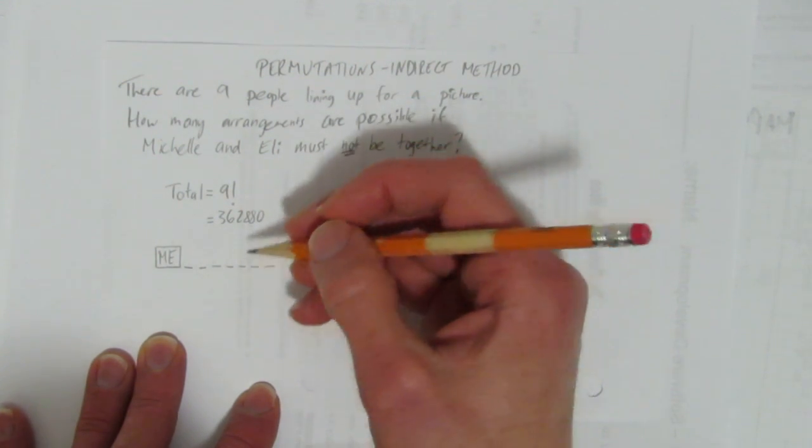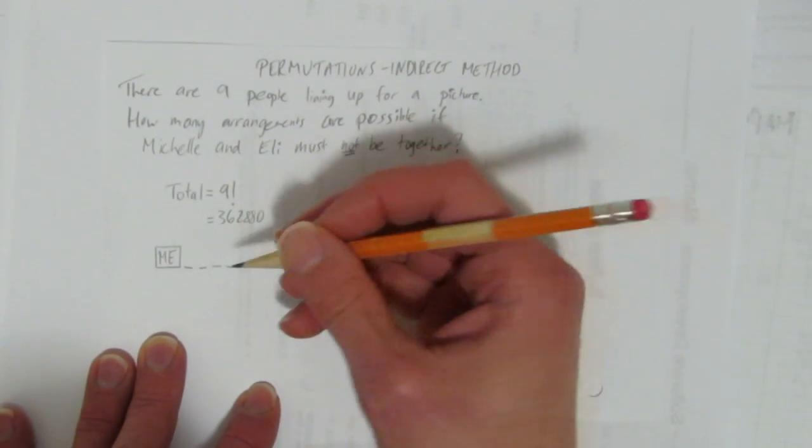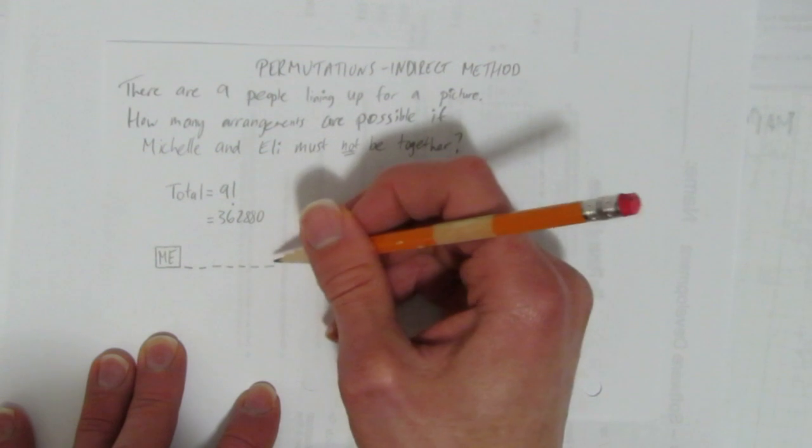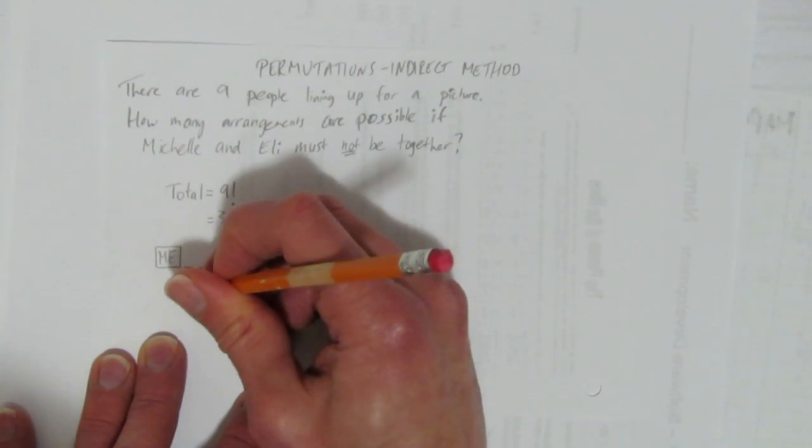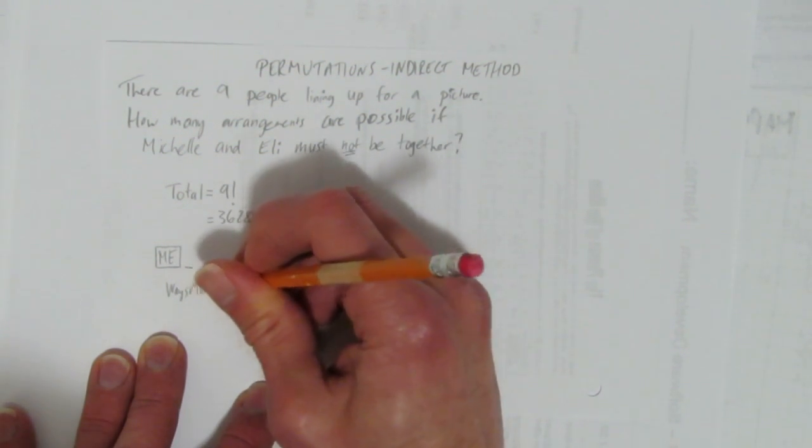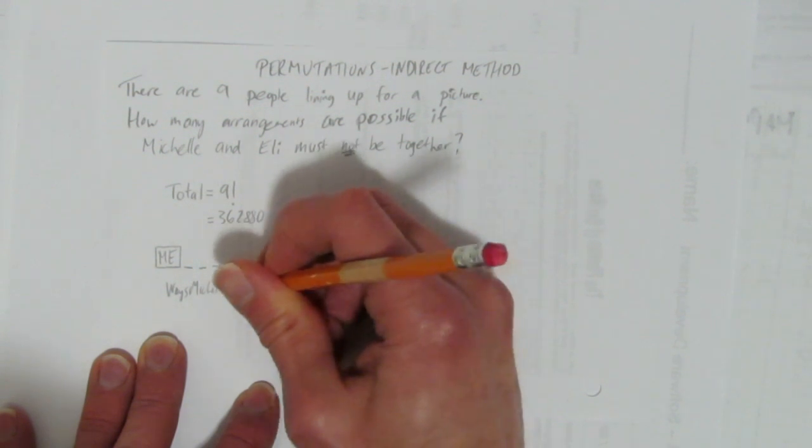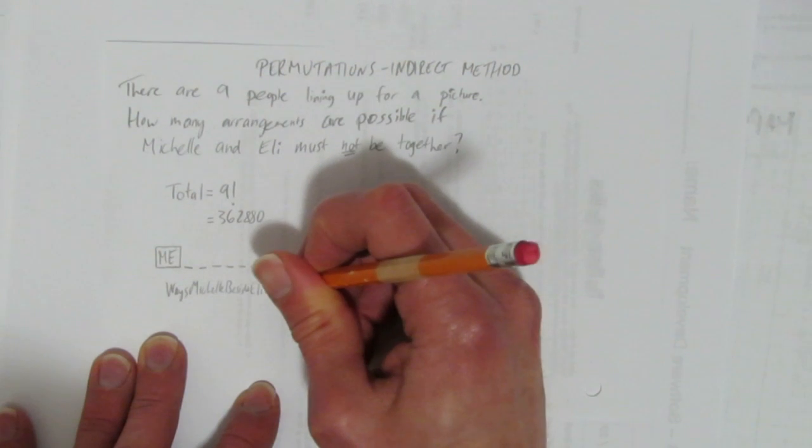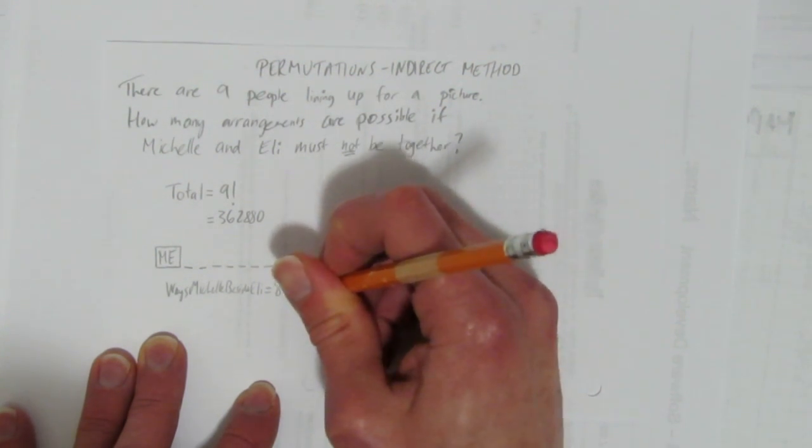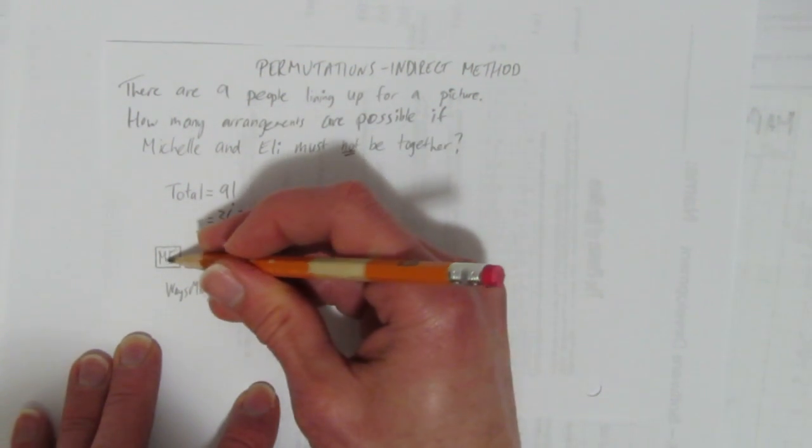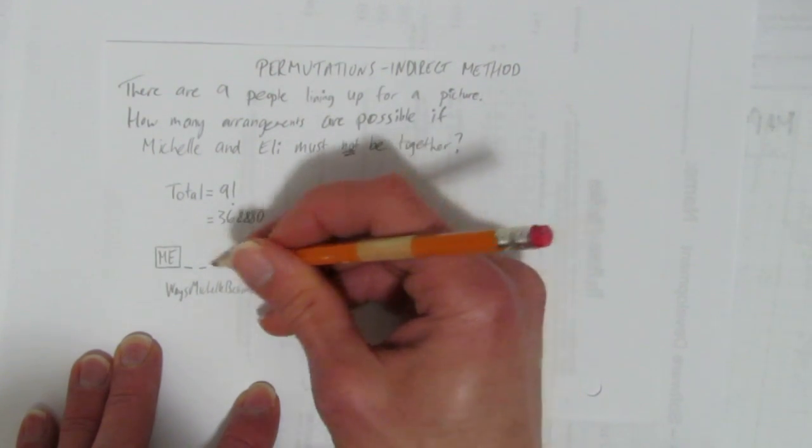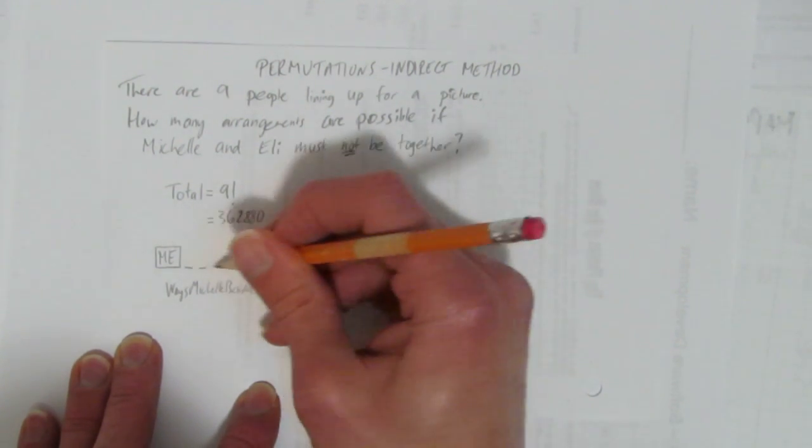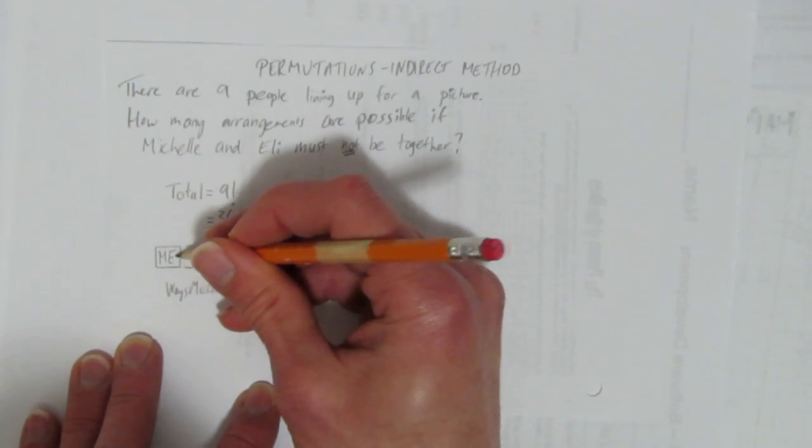In other words, the number of ways that Michelle and Eli could be beside each other are eight factorial. So I'm going to write that ways Michelle beside Eli equals just eight factorial. That's Michelle here, Eli here, and then there's eight factorial ways to arrange those items, Michelle, Eli.